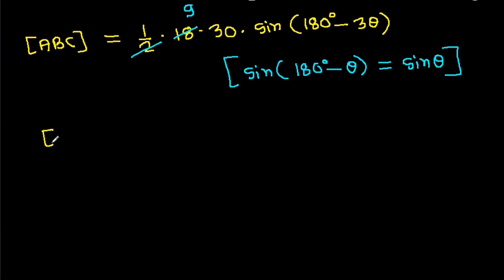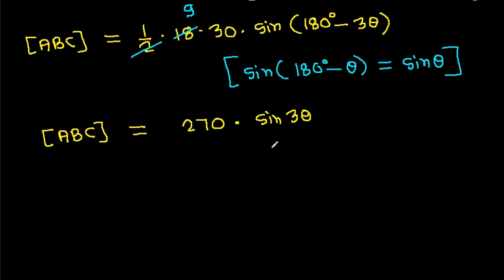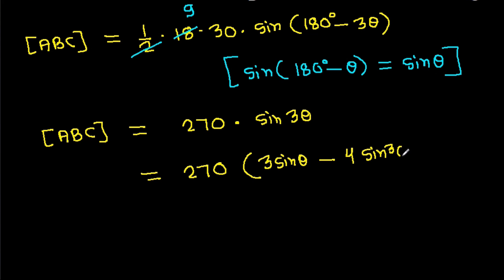So area of ABC equals 9 times 30, which is 270, times sine(3 theta). And sine(3 theta) expands to 3 sine theta minus 4 sine cubed theta. So area of ABC equals 270 times (3 sine theta minus 4 sine cubed theta).